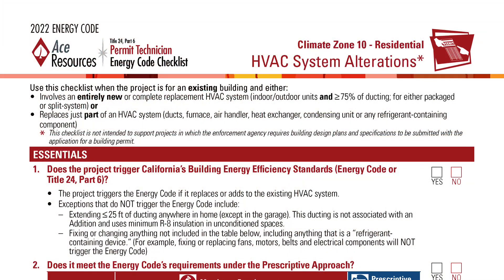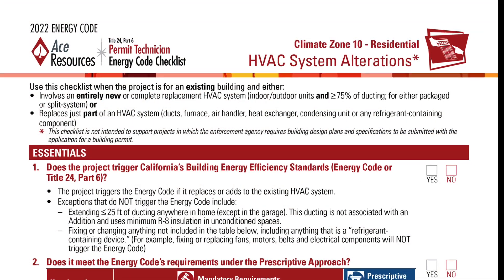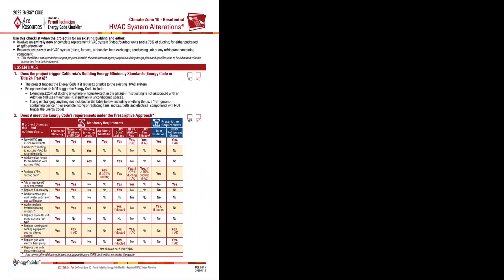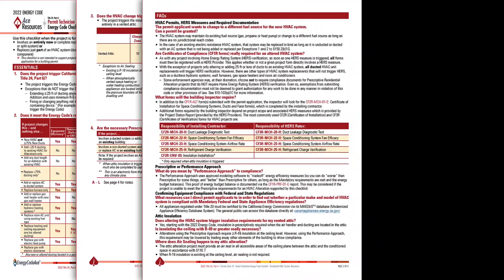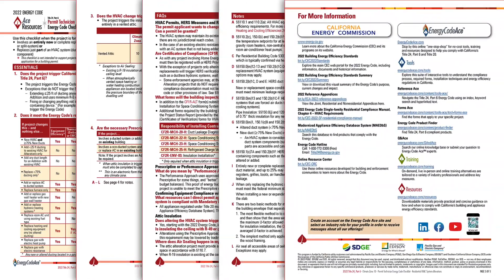In general, each checklist has between four to six pages. Each page serves a distinct purpose, and this organization is used across your set of checklists for ease of quick reference.